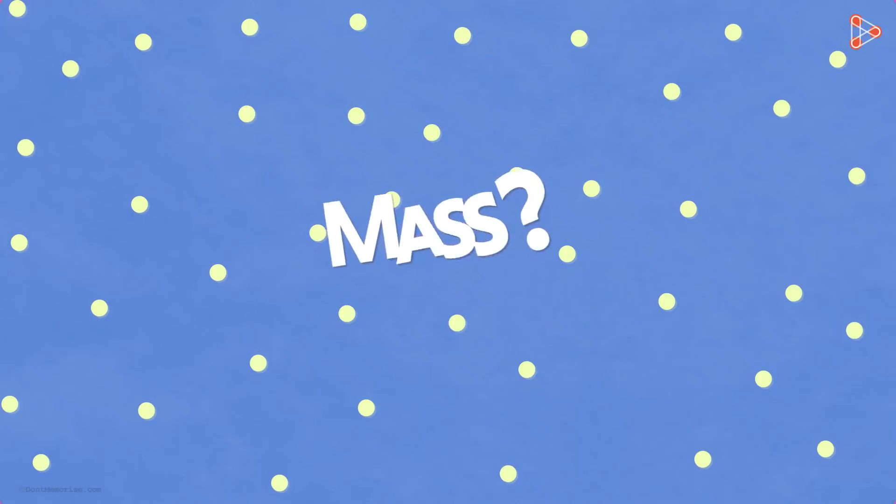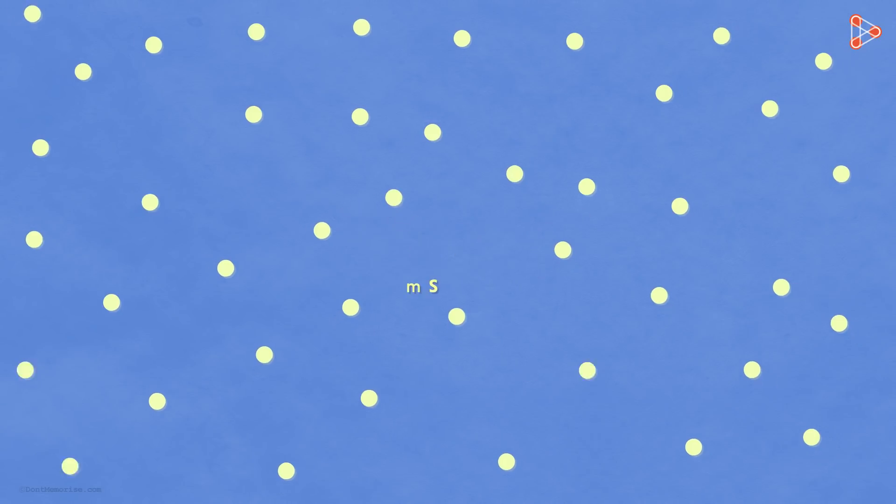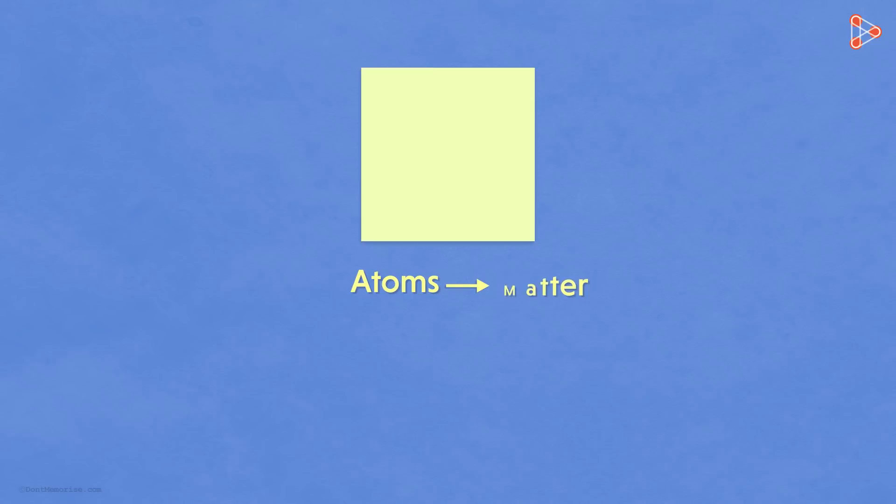Now if they are so small, do you think they will have any mass? Think for a moment. If we say that atoms come together to make up matter and if matter always has mass, it means atoms must possess at least some amount of mass. Yes, although atoms are very tiny, they do have some mass.